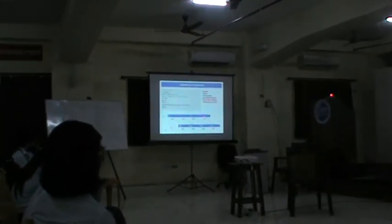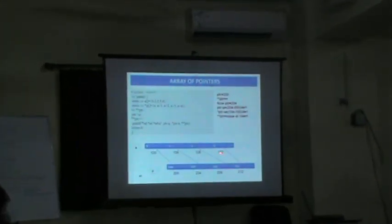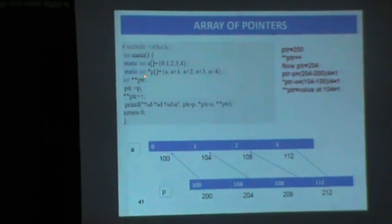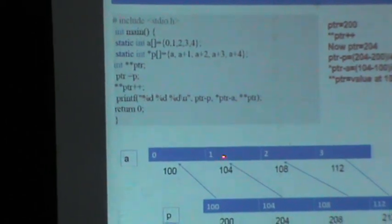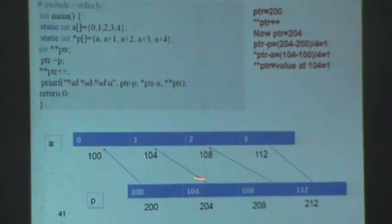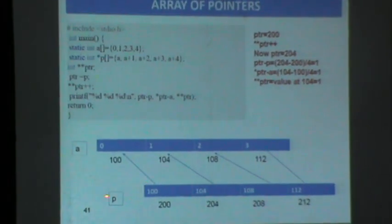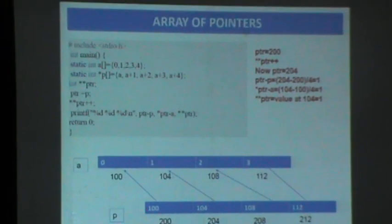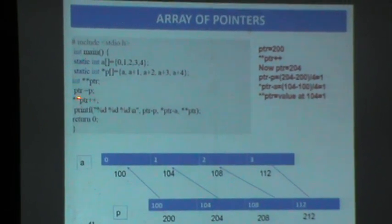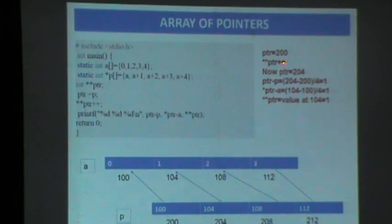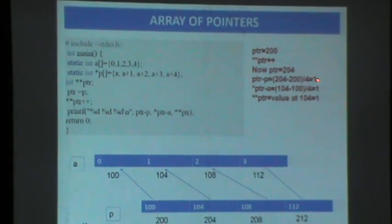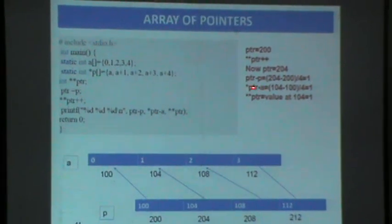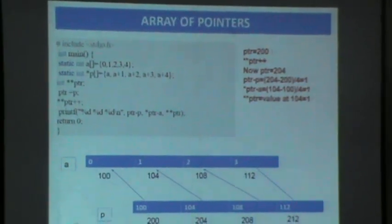If this is an array 0, 1, 2, 3, it has addresses 100, 400, 800, 12. When we declare an array of pointers, it stores the address of A, A1, A plus 2, and so on. PTR is at 200 because PTR equals P, and after PTR++, PTR is now 204. So PTR minus P is 204 minus 200 divided by 4, which is 1. This is the correct answer: 1, 1, 1.